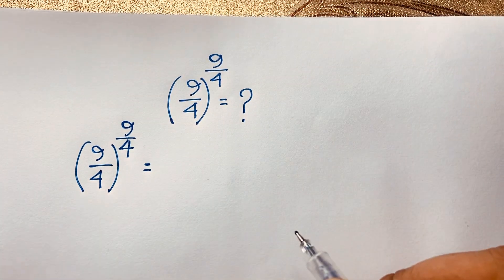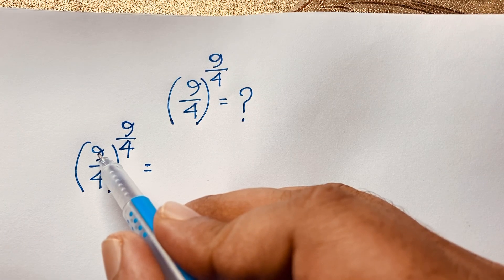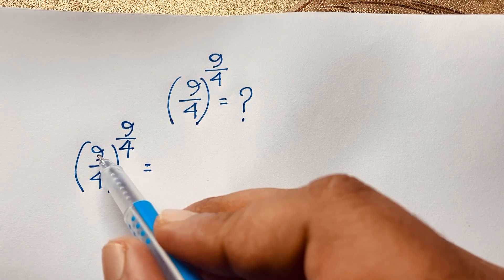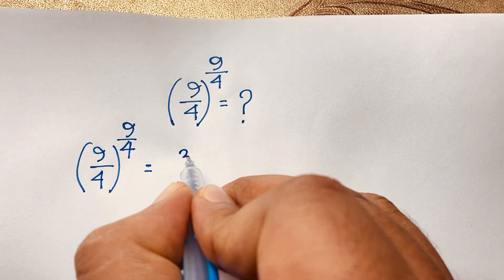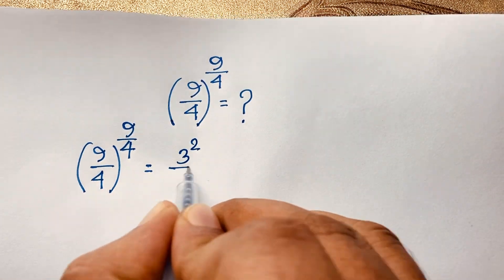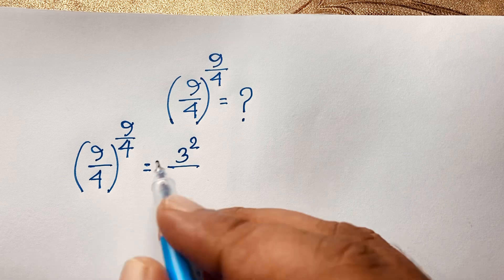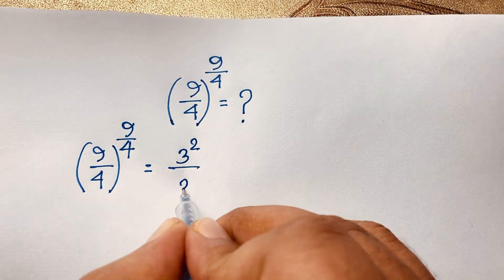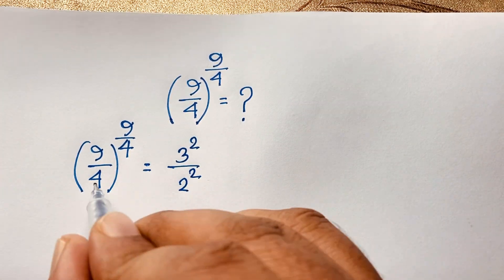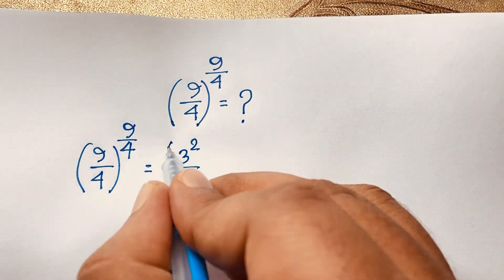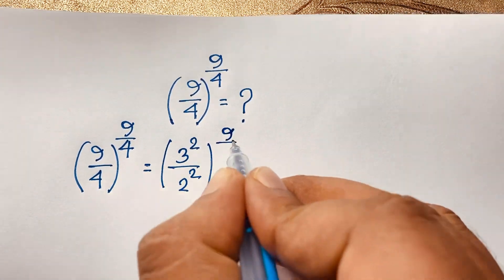Now you can see here that 9 equals 3 to the power of 2, and this 4 is also 2 to the power of 2 — since 3 times 3 equals 9, and 2 times 2 equals 4. So we have (3² / 2²) whole to the power 9/4.